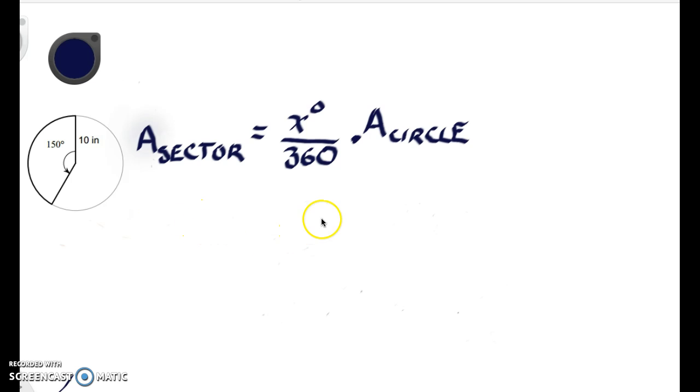So to find the area of the sector of the circle, you have to find the area of the circle and multiply it by the fraction that the sector is of the circle.